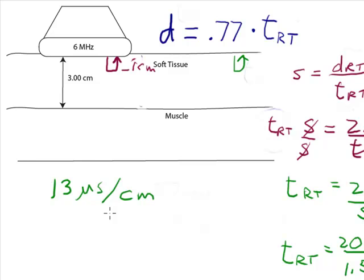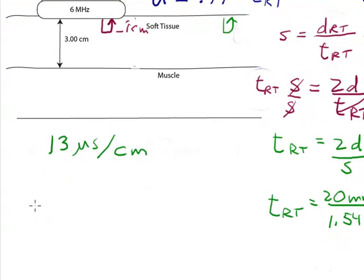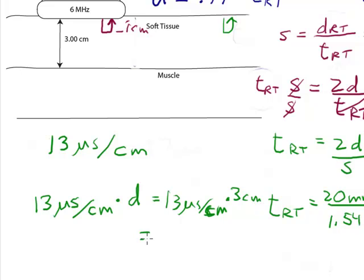If the sample is 2 cm away, it's going to take 26 microseconds. Let's look at this example where the reflector is 3 cm away. All I have to do is use my rule of 13 microseconds per centimeter times the distance in centimeters. That's 13 microseconds per centimeter times, in this case, 3 cm.